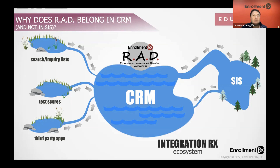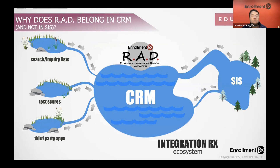On the left-hand side, we're showing how data sources could be feeding into the system. Those could be anything from search lists or test score data, or even third-party applications — the Common Application or CAS applications — that might be feeding into and populating data in the CRM system.